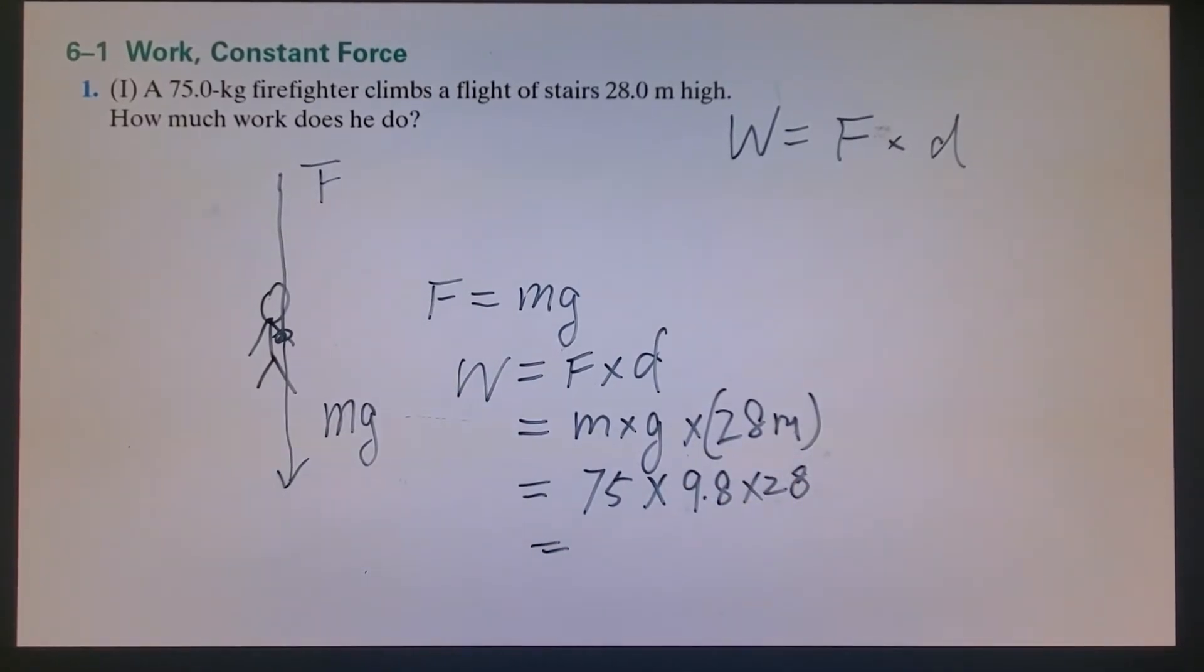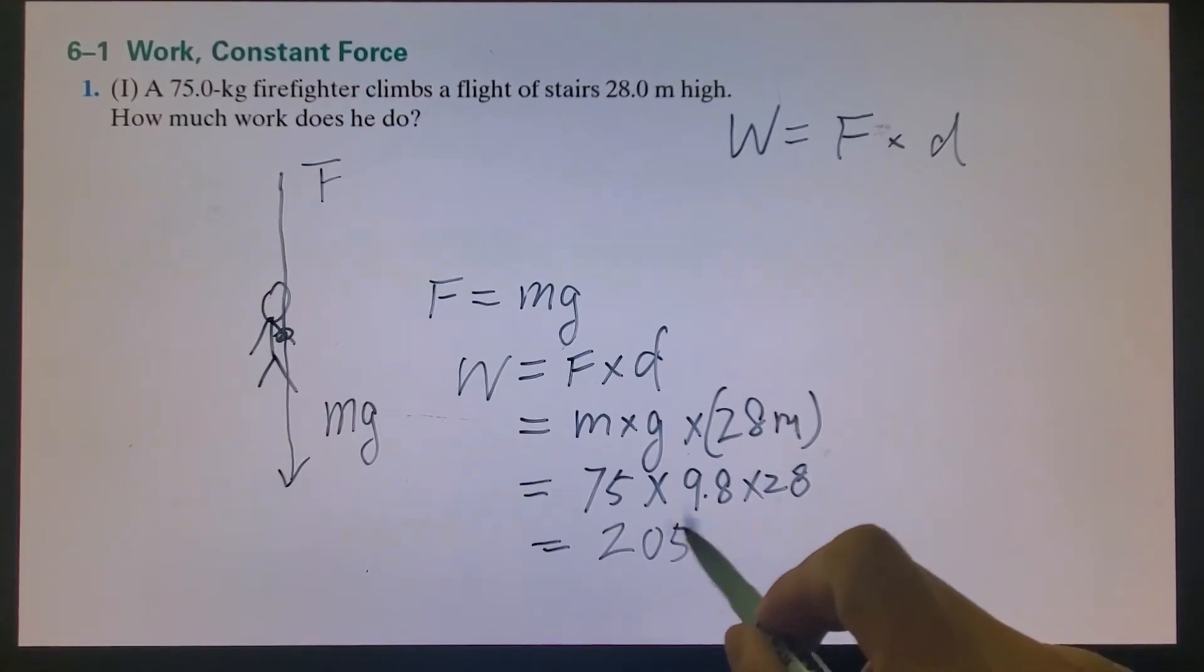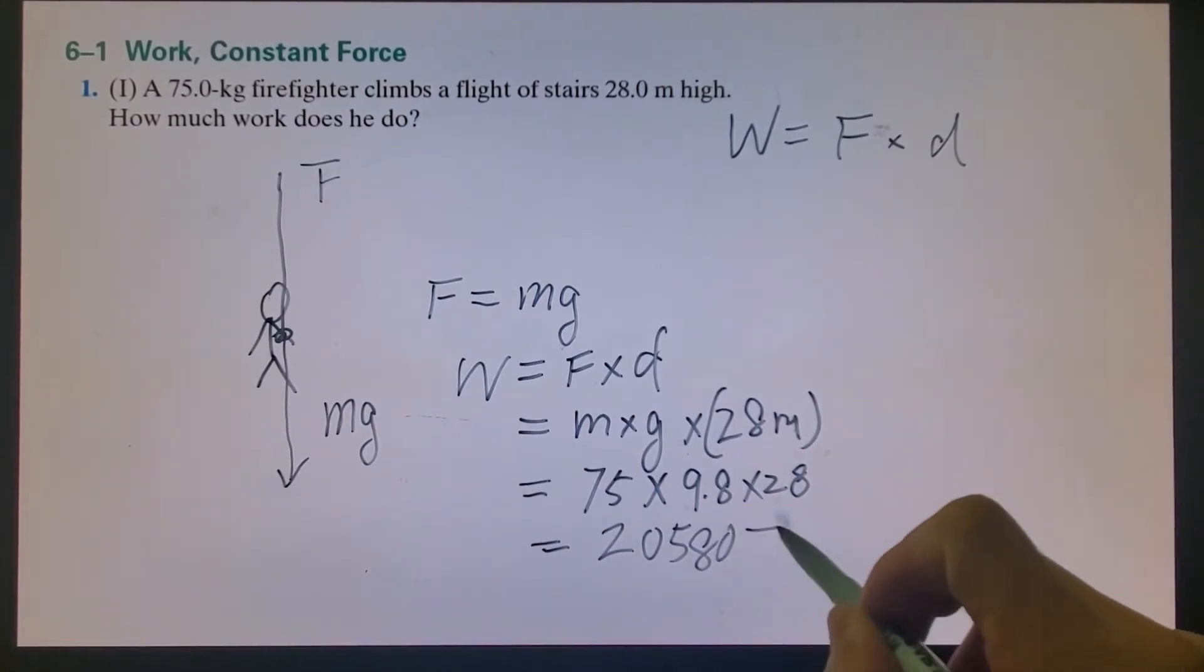If you use all the SI units, we don't have to worry about this unit. 75 times 9.8 times 28. That will equal 20,580 joules.